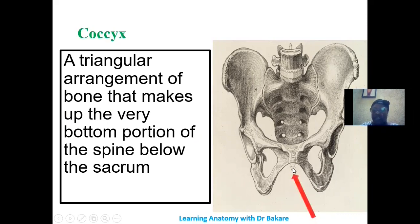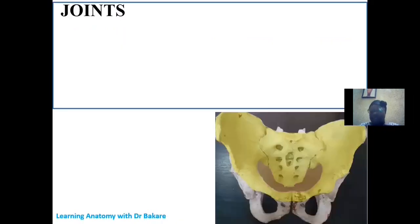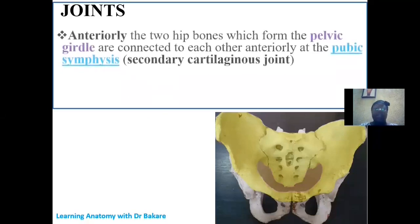The coccyx is a triangular-shaped bone attached to the distal part of the sacrum. It does not provide major structural support in the formation of the pelvis, but creates sites for muscle attachment.